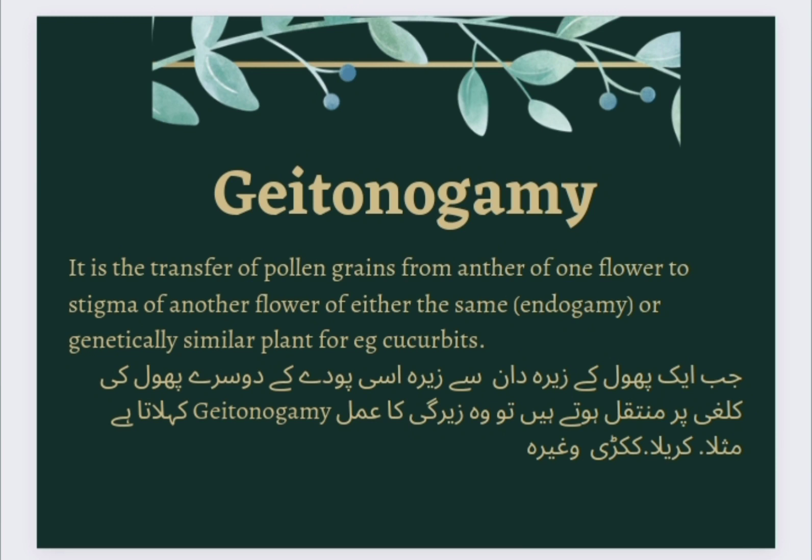Geitonogamy: It is the transfer of pollen grains from the anther of one flower to the stigma of another flower of either the same or genetically similar plant. Example: Cucurbits (karela, kakdi). وہ جیرگی کا عمل Geitonogamy کہلاتا ہے۔